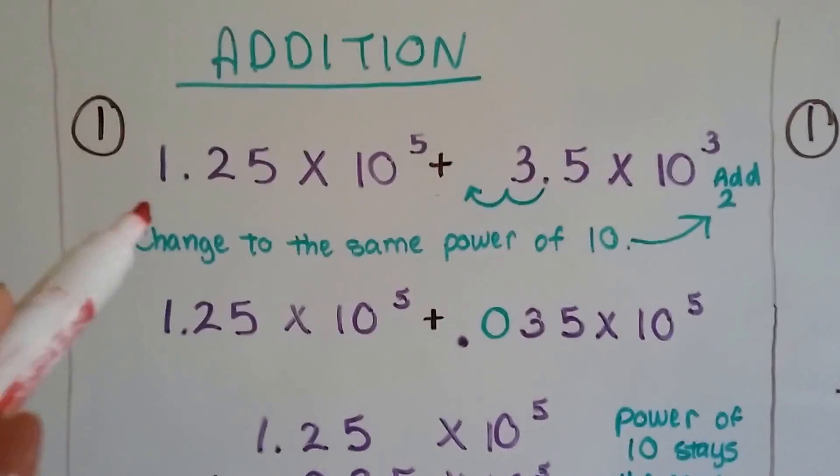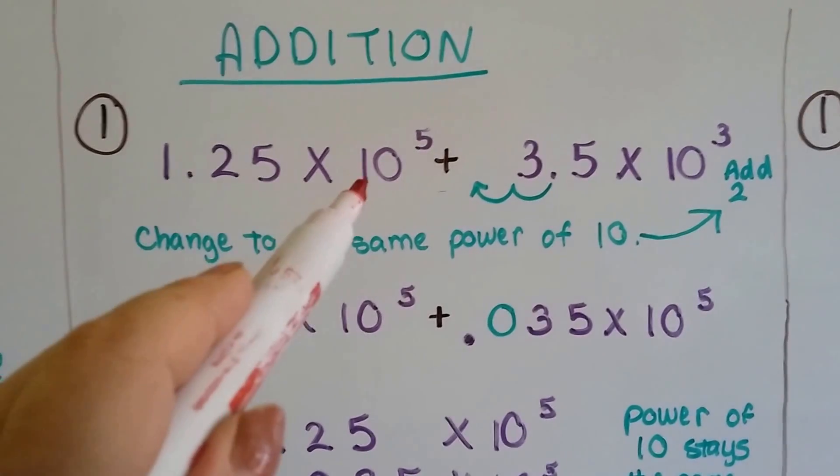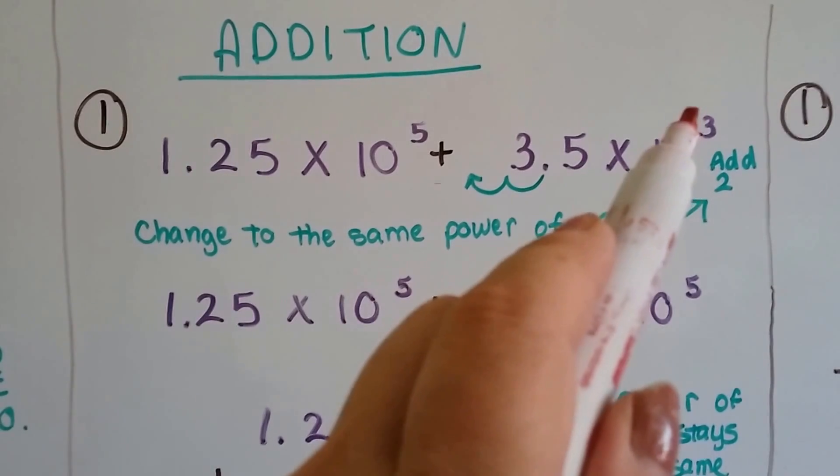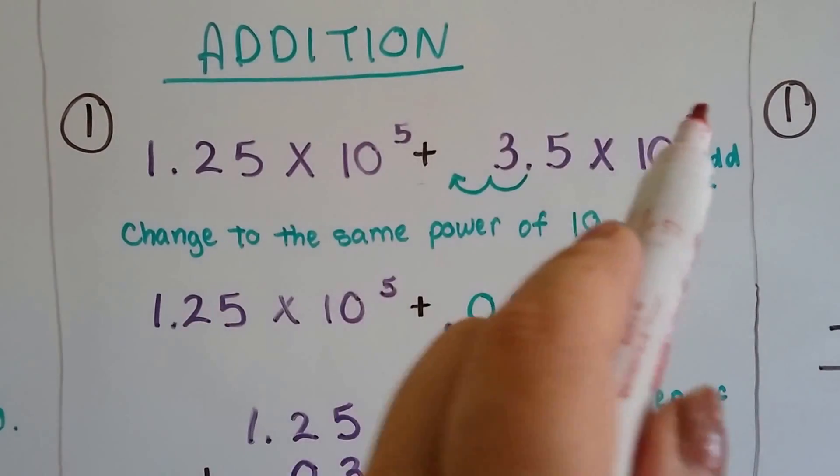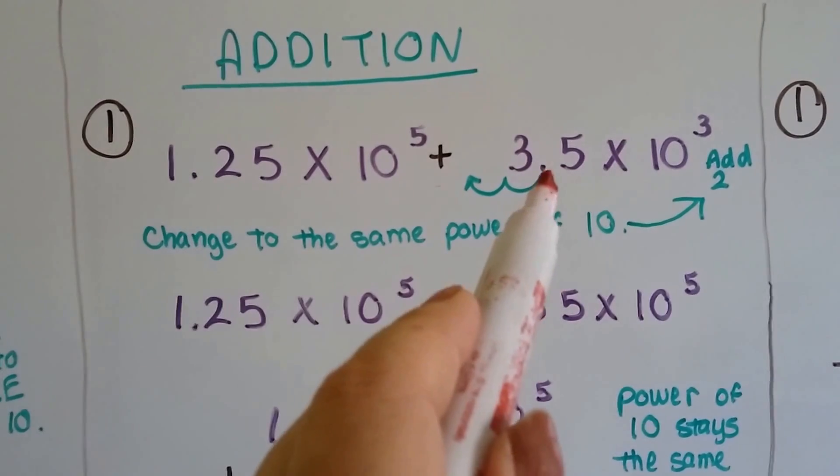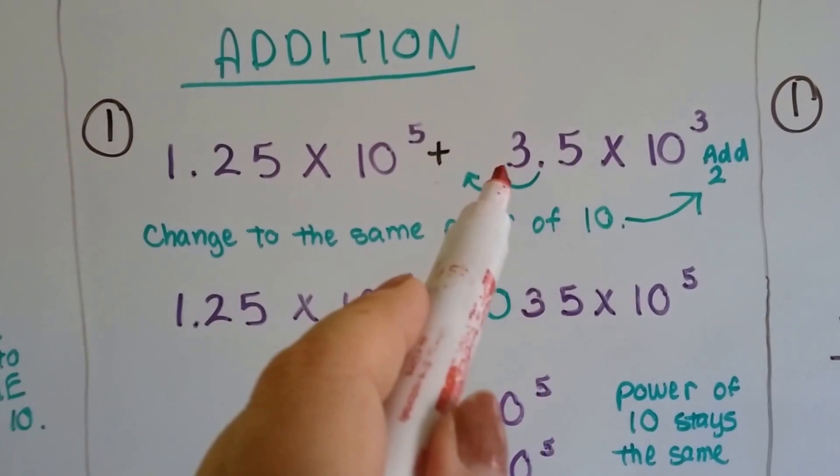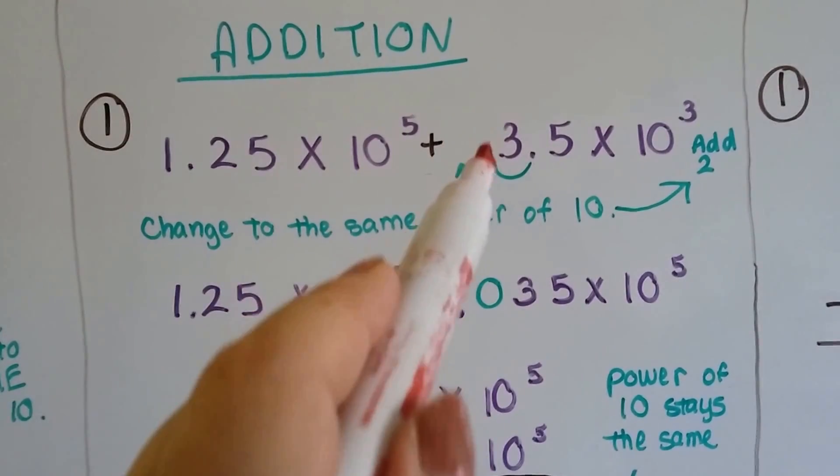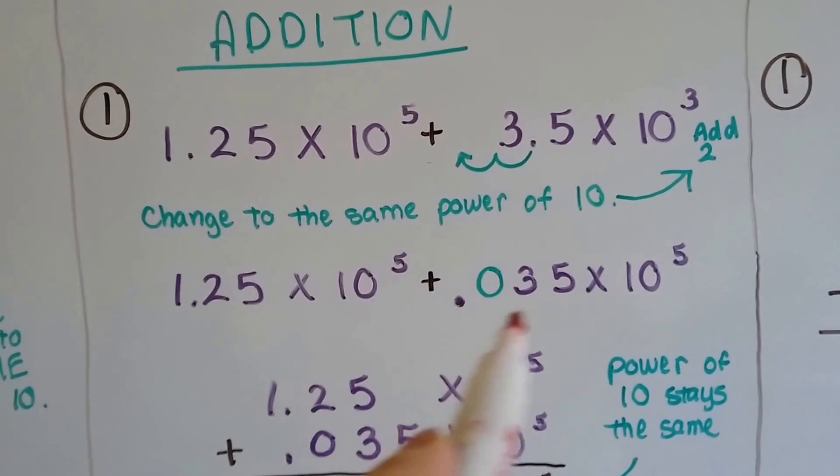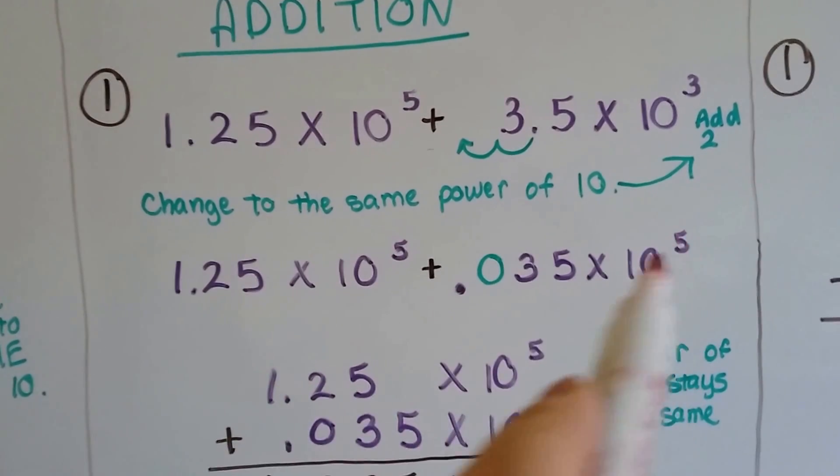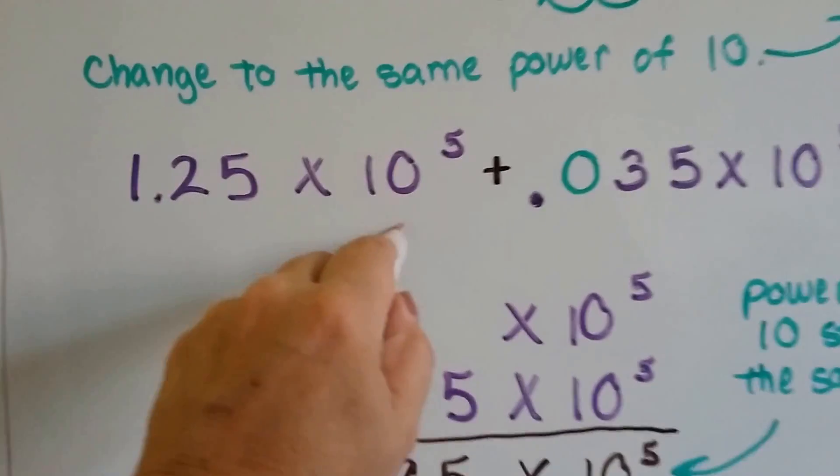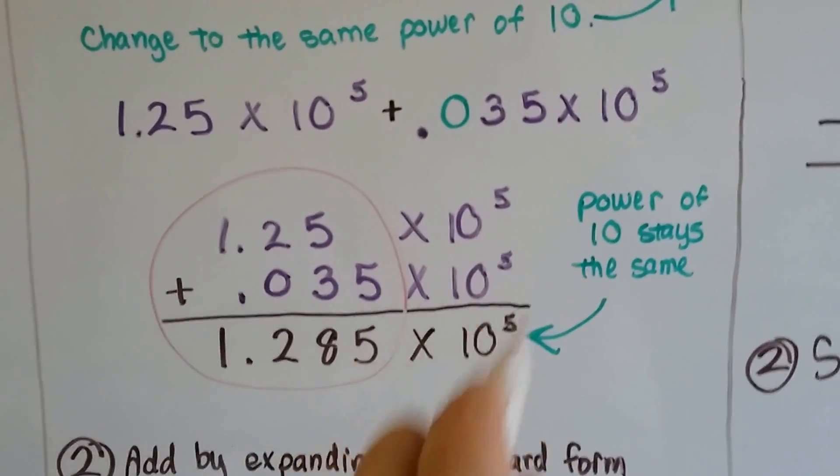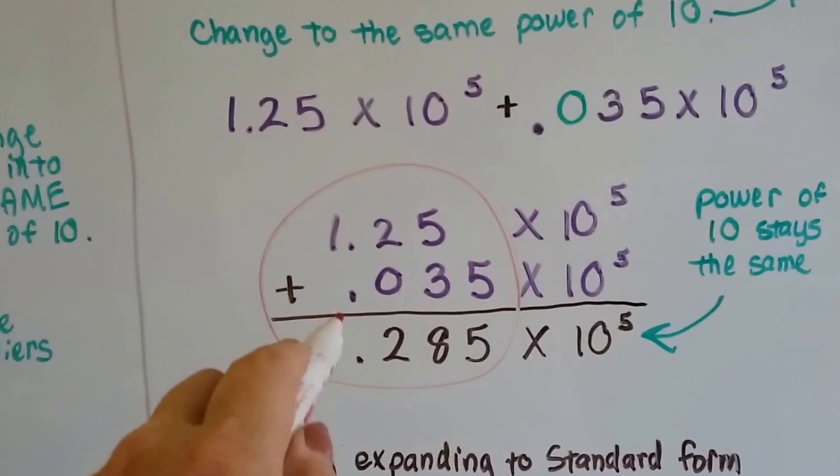So here's the addition. I've got 1.25 times 10 to the 5th power and also 3.5 times 10 to the 3rd power. I need the powers to match, so I'm going to move this guy up by pushing this decimal point one space, two spaces, and then I'm going to put a zero here as a placeholder. So now I've got .035. My powers are the same, so now I can add the multipliers. My powers of 10 are going to stay the same; we're just going to add the multipliers.